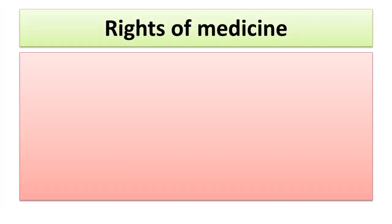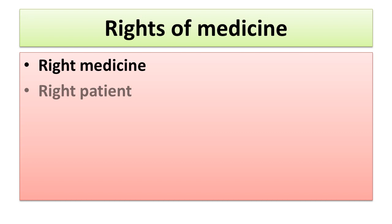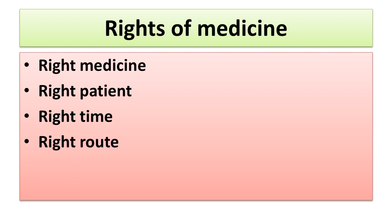There are five basic rights of medicines. The first one is right medicine — you have to give the right medicine to the patient, not the wrong medicine. The second is right patient — you have to give the medicine to the correct patient, not to a wrong or different patient.